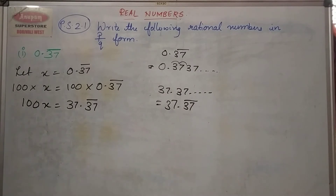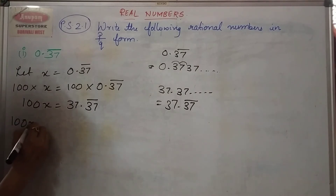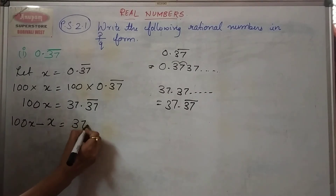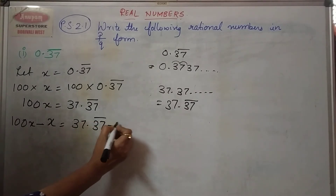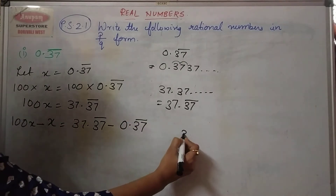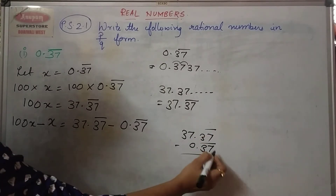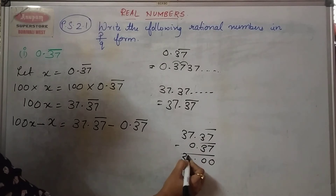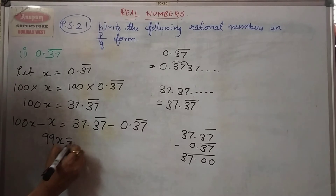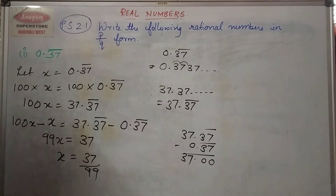Now the third step is subtracting. When we subtract 100x minus x on the left hand side, and similarly subtract the right hand side: 37.37 bar minus 0.37 bar. The 0.37 minus 0.37 cancels, giving 37. So this becomes 99x is equal to 37, so x is equal to 37 upon 99.